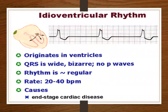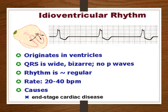Next is your idioventricular rhythm. It originates in the ventricles. The QRS is wide and bizarre with no P waves. The rhythm is usually irregular and your rate is usually between 20 and 40 beats per minute. A common cause is end-stage cardiac disease.